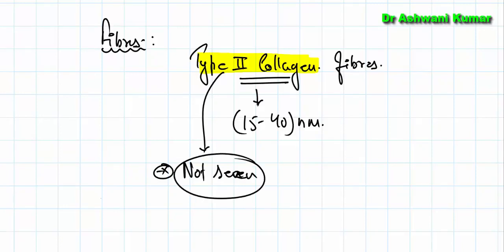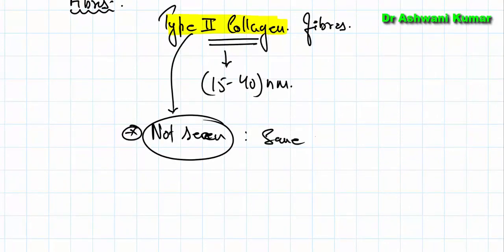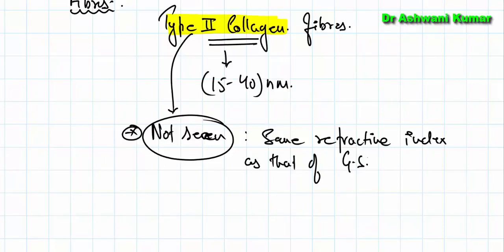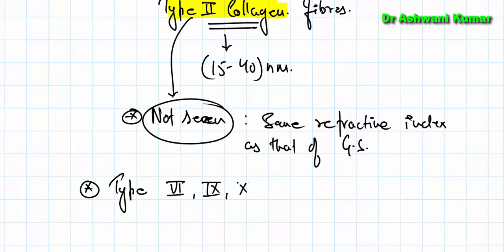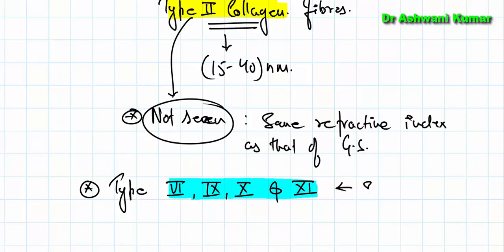The reason they are not seen in histological sections is because of the same refractive index — the ground substance and the collagen fibers share the same refractive index, so in normal H&E preparation we cannot appreciate the collagen fibers. Apart from type 2, hyaline cartilage also possesses type 6, type 9, type 10, and type 11 collagen fibers, but all these are present only in very small amounts.